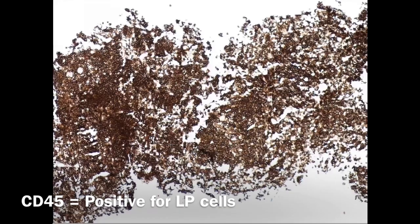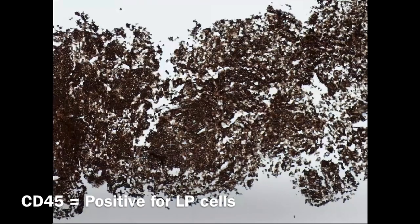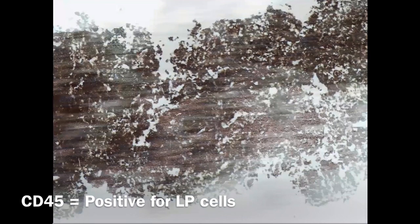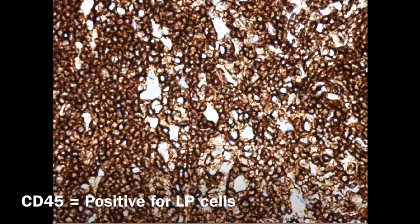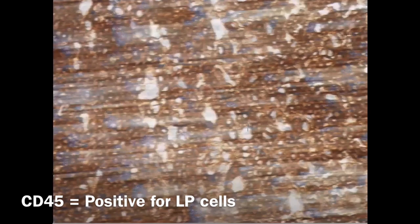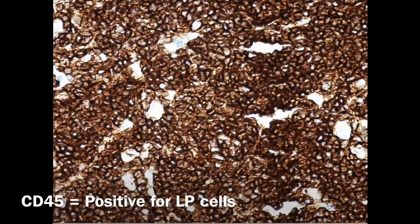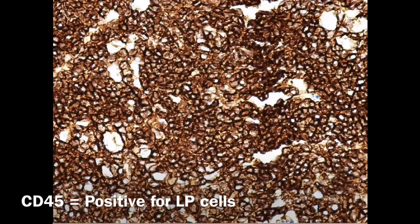Now let's take a look at the CD45. CD45 was negative in the classic type, and here it's the reverse — it's positive for LP cells. Here at 40x, this is a big cell and as you can see the membrane is deeply stained with CD45. Please compare it with the other video. See here how the membrane is deeply stained — a perfect line of deep stain for the CD45.